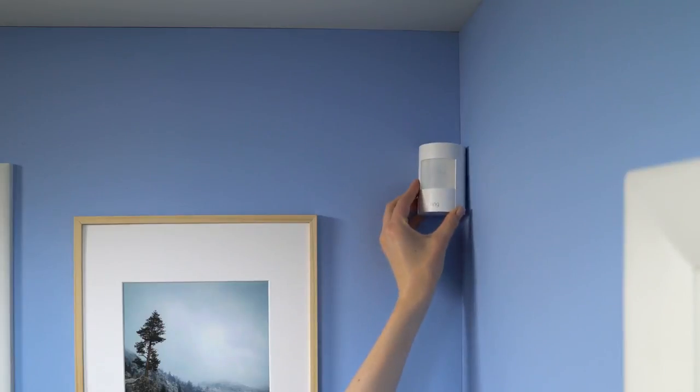A motion sensor works best when it's placed six to eight feet high. This keeps it out of the way of kids, pets, and accidental bumps or kicks.